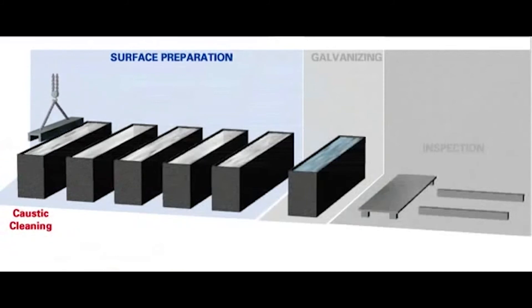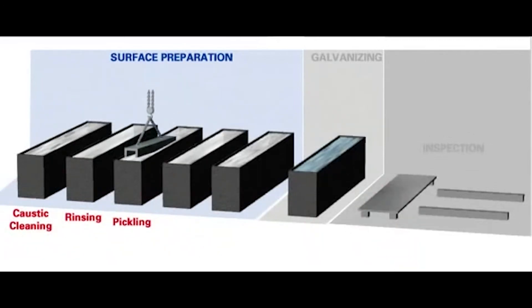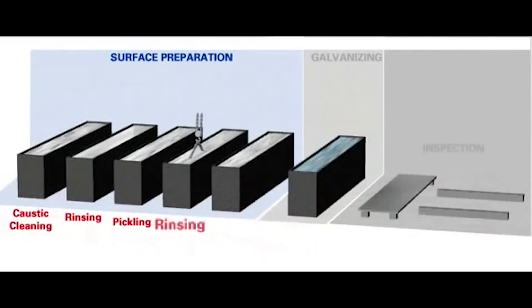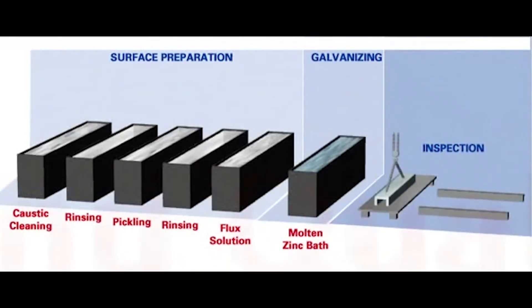This is the carbonization method. First, we start with caustic cleaning. Second is rinsing. Third is pickling. Then move on to the fourth step, which is rinsing again. Fifth is flux solution. Then we reach the carbonizing tank. And finally, we are ready for inspection, quality checking, and cooling.